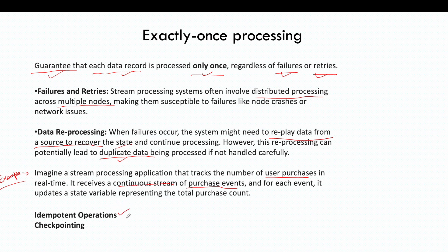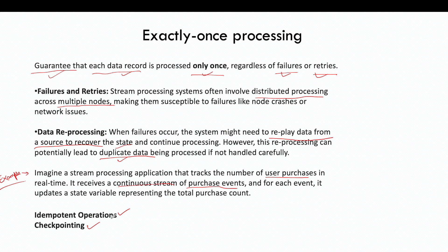How can we handle that? The first approach is idempotent operations — we need to design our stream processing application so that operations are idempotent, meaning even if the data is read and processed twice, the result remains the same. Checkpointing means that once certain operations are completed and a set of events are already read and processed, the intermediate state is flushed to a persistent system like disk. When a crash happens and the system recovers, it reads the state from the persistent disk and knows from where to start again. So idempotent operations and checkpointing can help us achieve exactly-once processing.